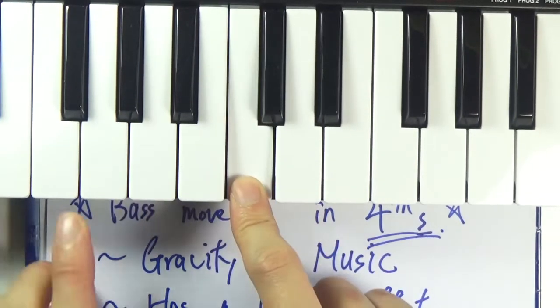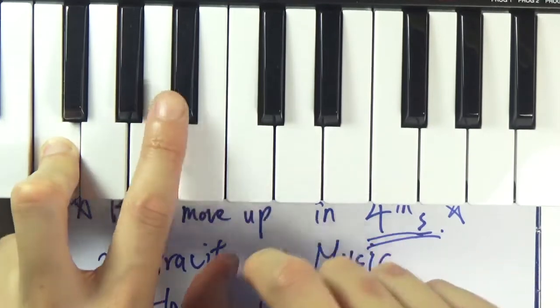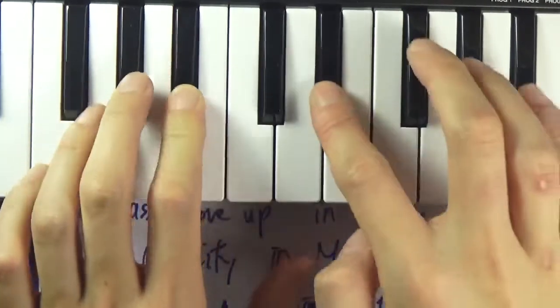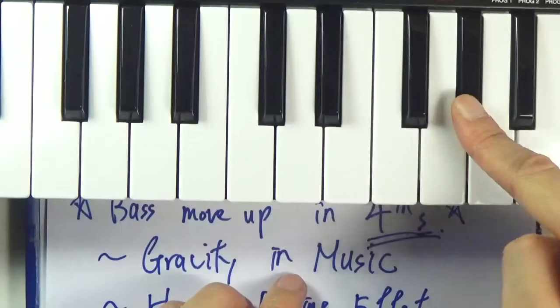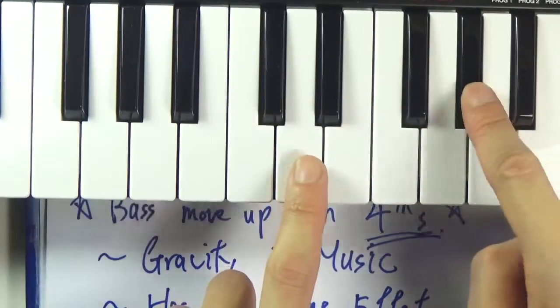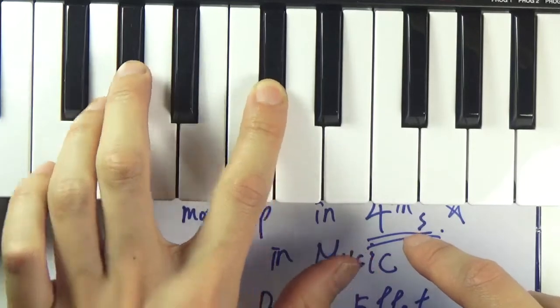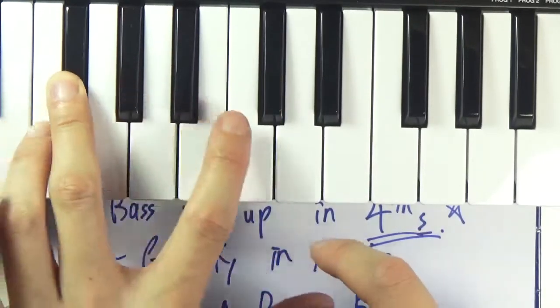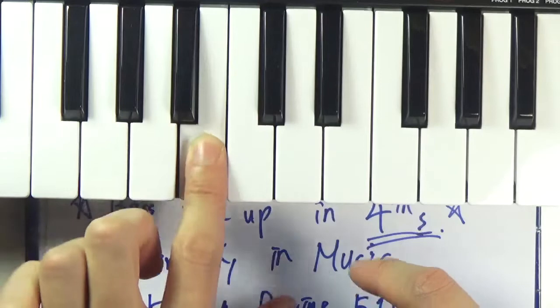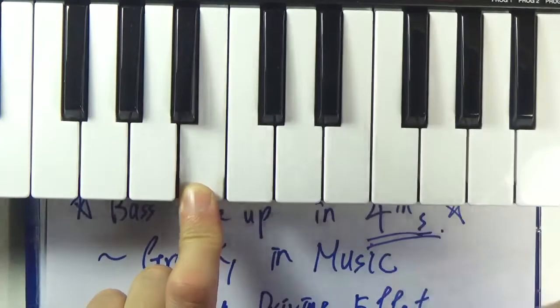So for example, after C you go to F, then G, A, B, and continuing through the cycle of fourths...